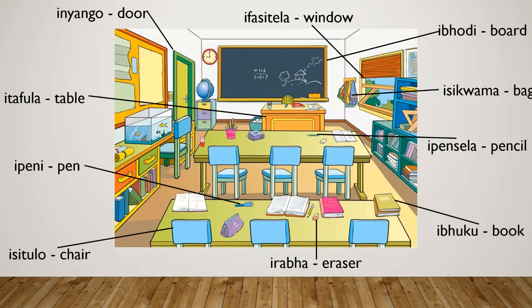As you can see, I have labeled all 10 objects: umnyango — door, ipasitela — window, ipodi — board, itafula — table, isikwama — bag, ipeni — pen, isitulo — chair, irapa — eraser, ipuku — book, and ipensela — pencil. Those are the things and you can see I have labeled them.